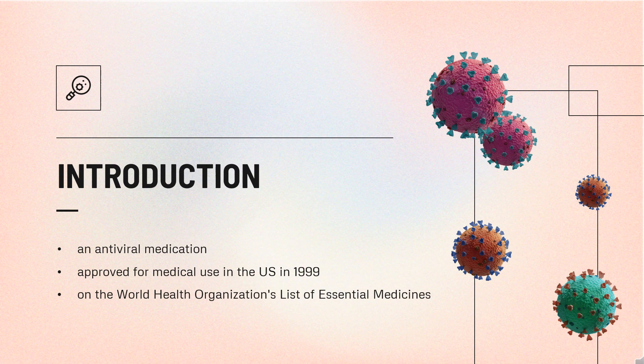Oseltamivir was approved for medical use in the U.S. in 1999. It is on the World Health Organization's list of essential medicines but was downgraded to complementary status in 2017. In 2020, it was the 178th most prescribed medication in the United States, with more than 3 million prescriptions.